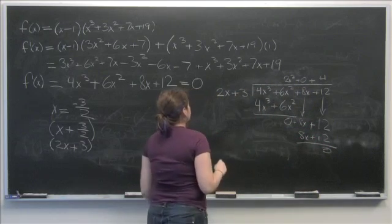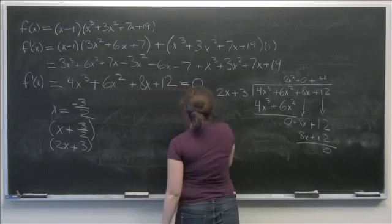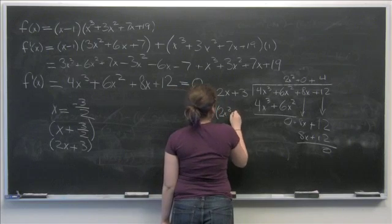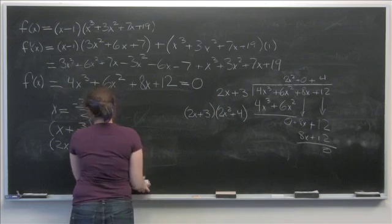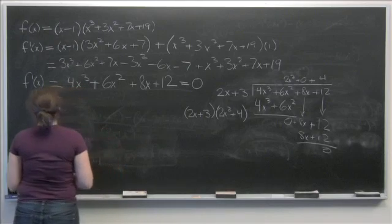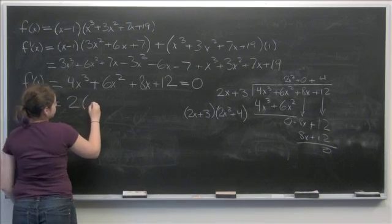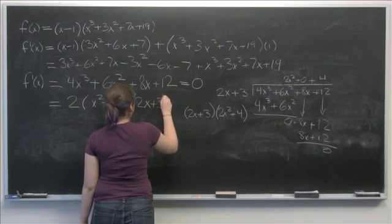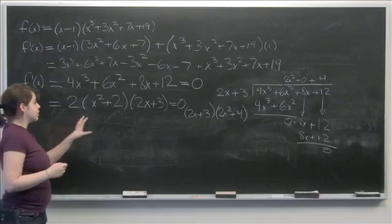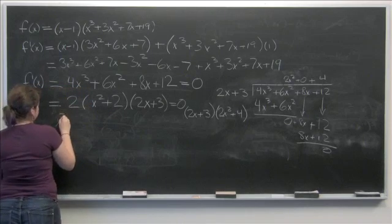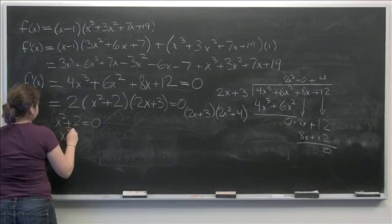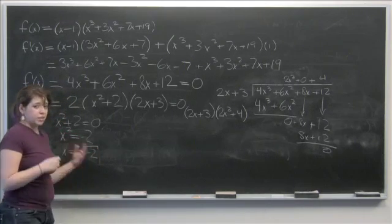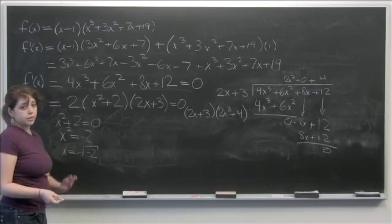So the factors of the derivative are (2x + 3) and (2x² + 4), which is 2(x² + 2)(2x + 3). Setting x² + 2 = 0 gives x² = -2, so x = √(-2), which is imaginary — complex, not real. We don't deal with that, so that doesn't count.